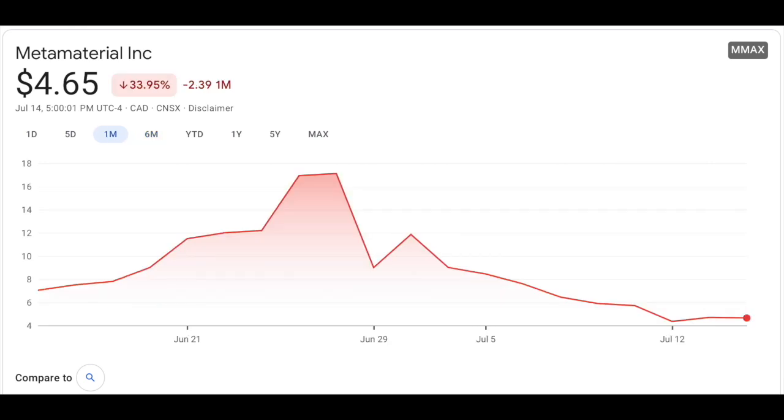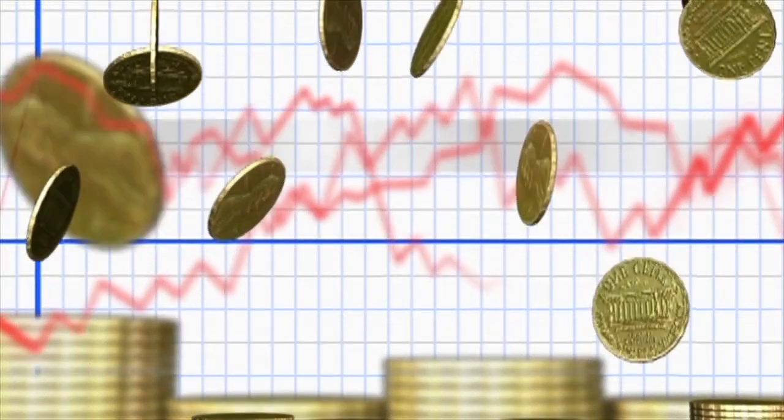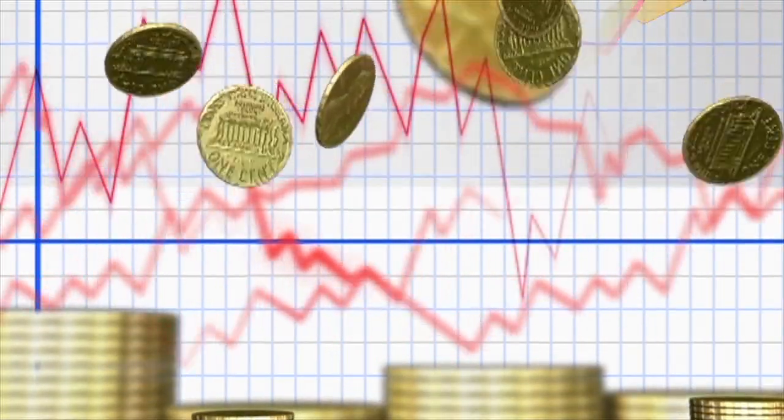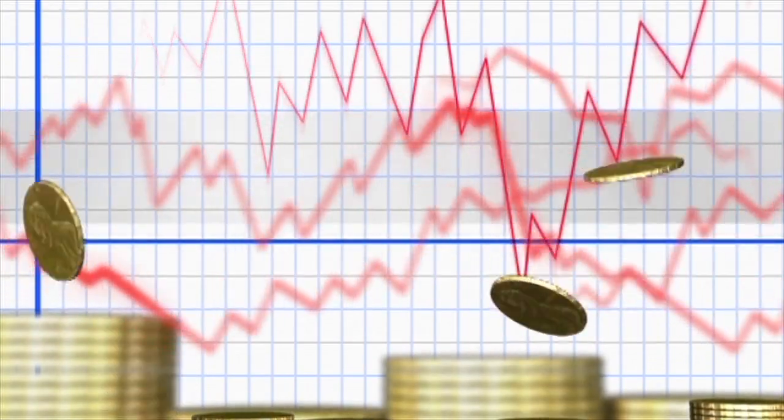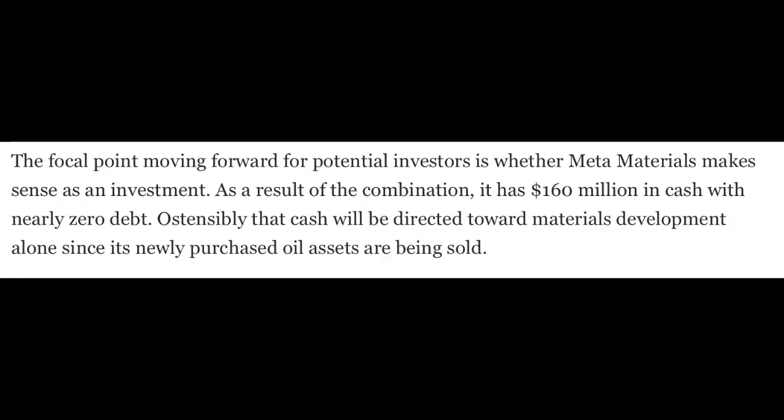After the merger, everyone knew what was going to happen. You were going to have a massive sell-off. A lot of people were hoping this could stay around a double digit stock, but it did not. We've seen this time and time again, and that's not bad because that's how a lot of people make money on the stock market. Incredibly positive news with Meta Materials. Meta Materials has 160 million in cash with nearly zero debt. That is very rare.